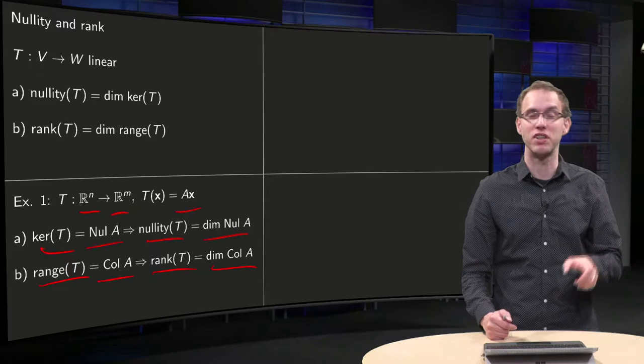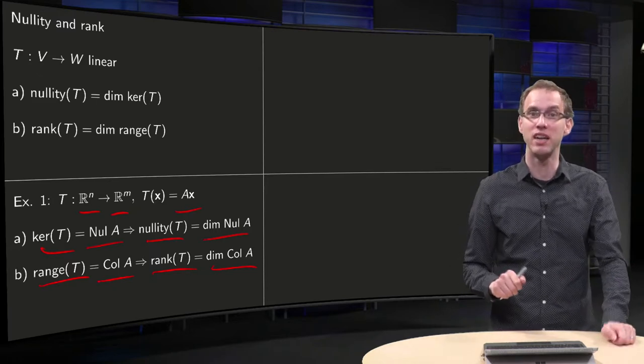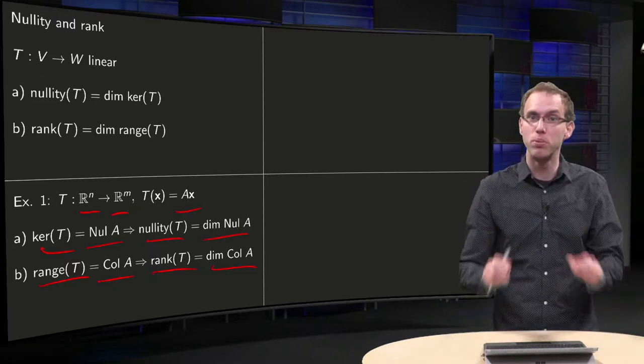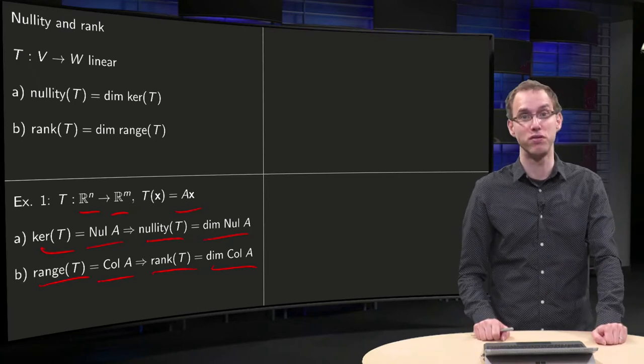So the rank of the transformation T is the same as the rank of the matrix A, which is, if you want to compute it, the number of pivots of the matrix A.